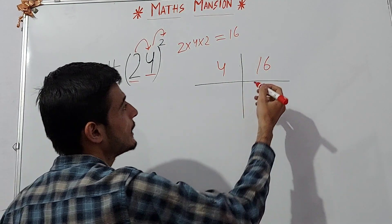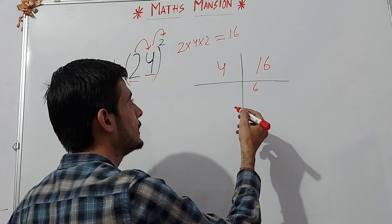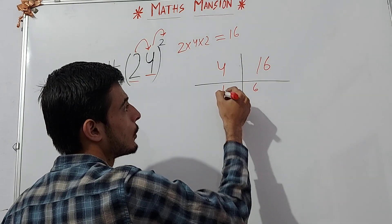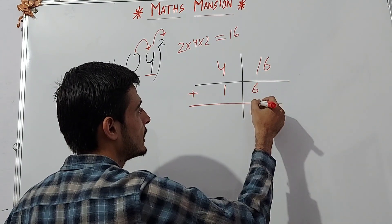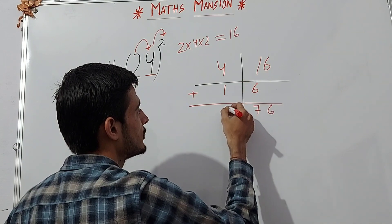Now write 6 under the 10th digit of the first column and 1 under the 1st digit of the second column. Now add them. Adding them we will get 6. 6 plus 1 is 7 and 4 plus 1 is 5.